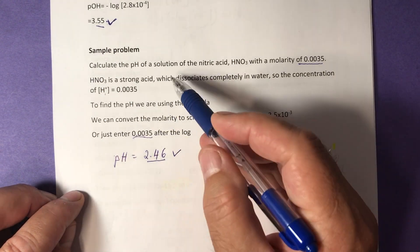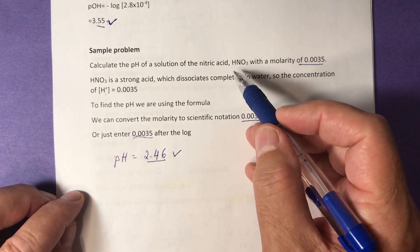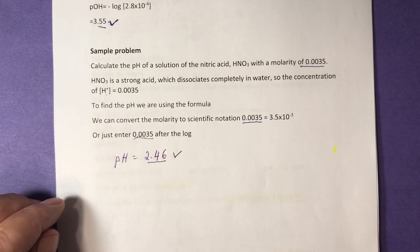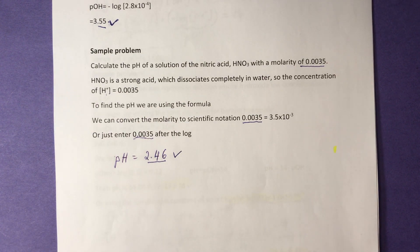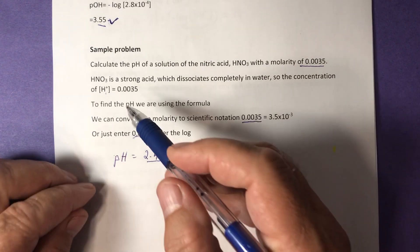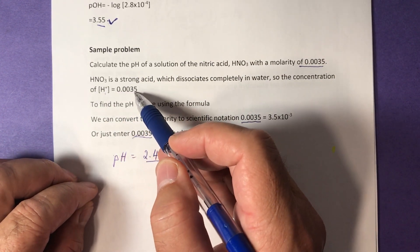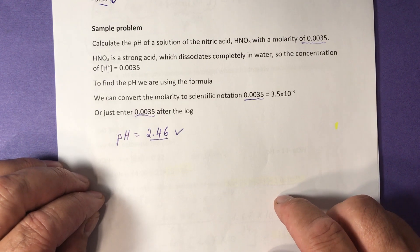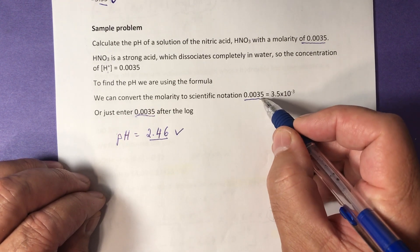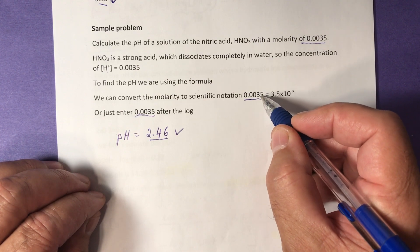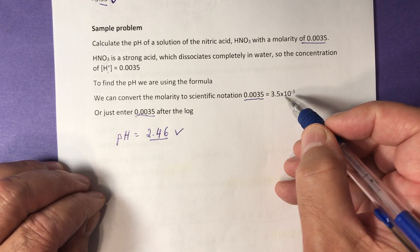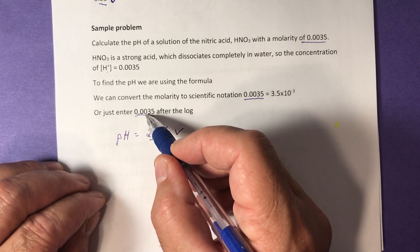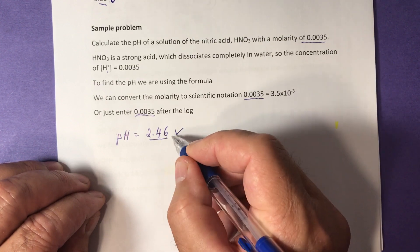Another sample problem. Calculate the pH of a solution of nitric acid, HNO3, with a molarity of 0.035. HNO3 is a strong acid which dissociates completely in water, so the concentration of hydrogen ions is 0.035. To find the pH, we are using the formula. We can convert the molarity to scientific notation by moving the decimal point and writing this as 3.5 times 10 to negative 3, or we just enter 0.0035 in your calculator, and you'll get the answer pH 2.46.